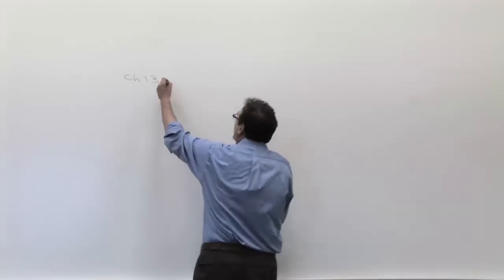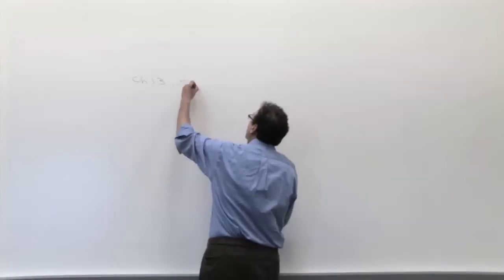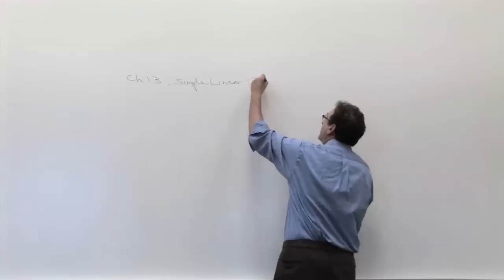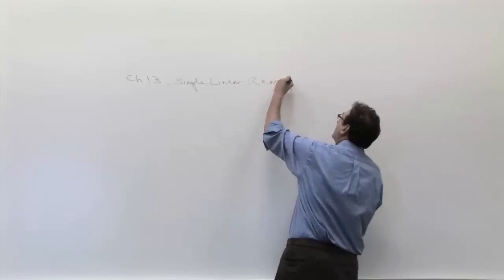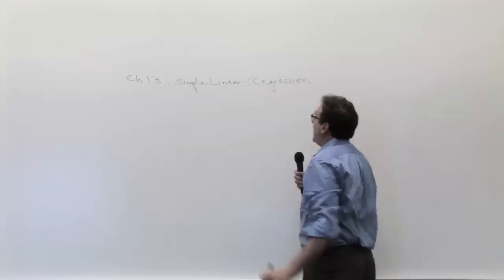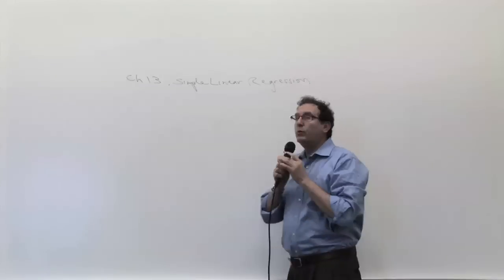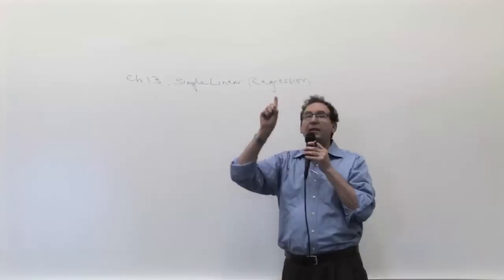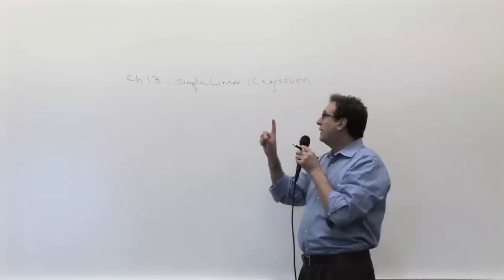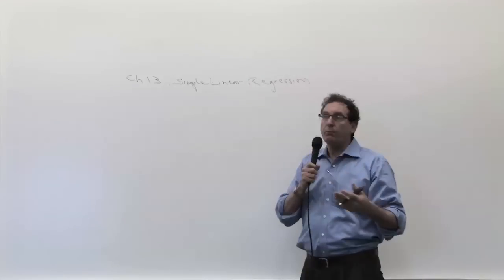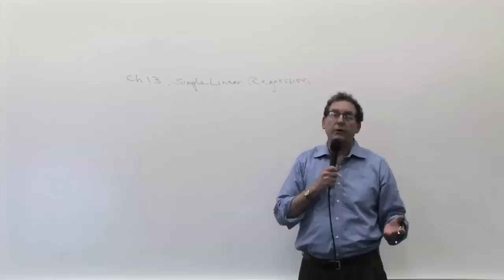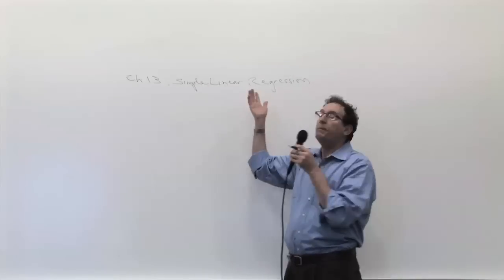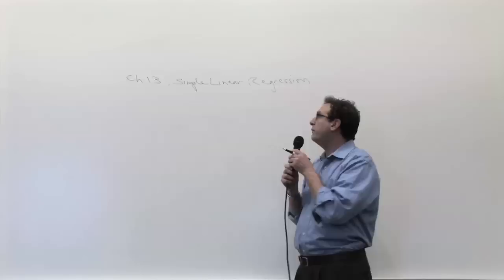Chapter 13 is called Simple Linear Regression. All of these terms have to be explained at some point. It's not called simple because it's simple — even though it is pretty simple — it's simple because we're talking about a single X variable, as opposed to many X variables, which we'll learn about in Chapter 14, called Multiple Linear Regression. So 'simple' really means only one variable.